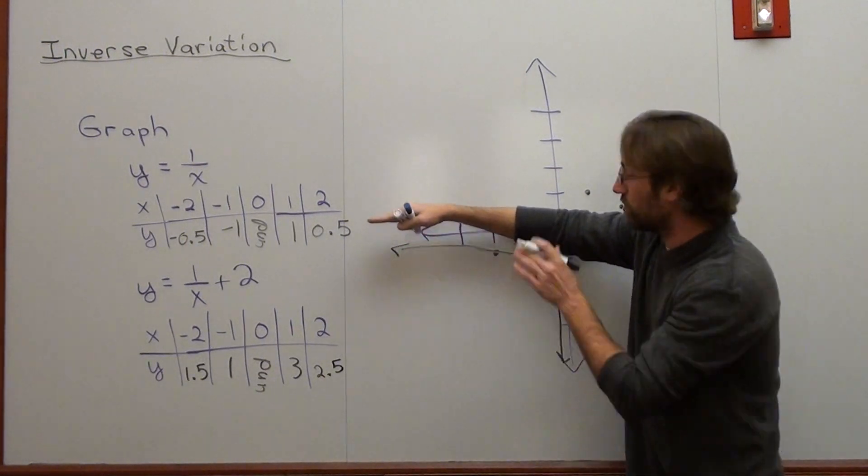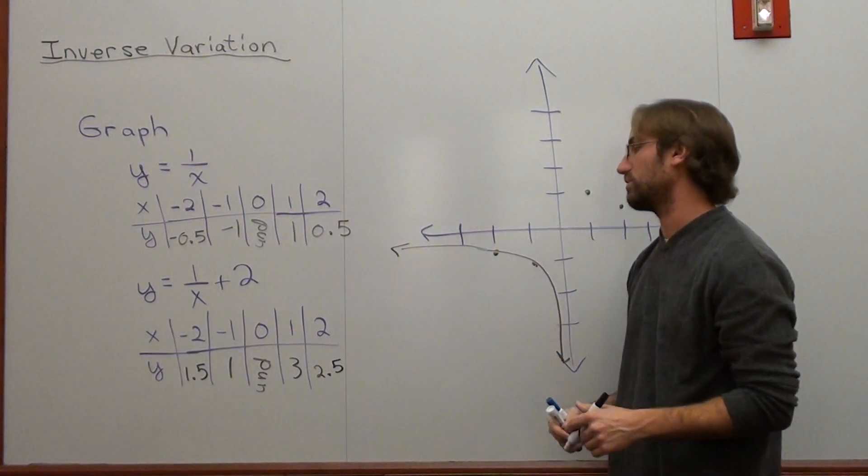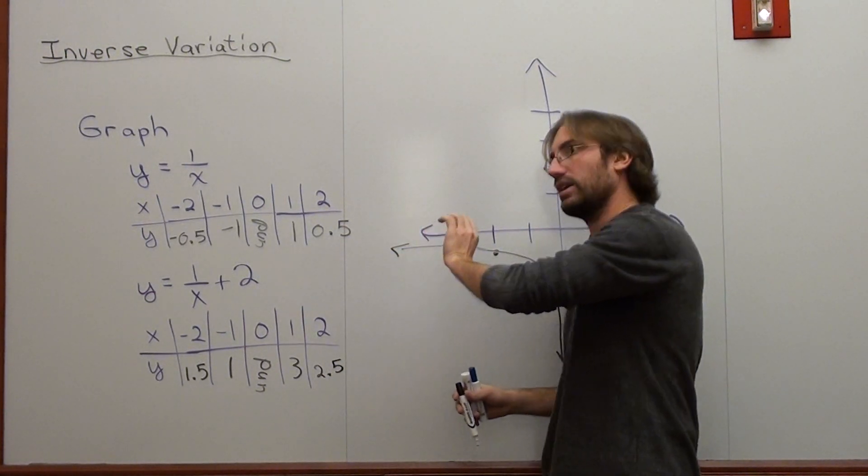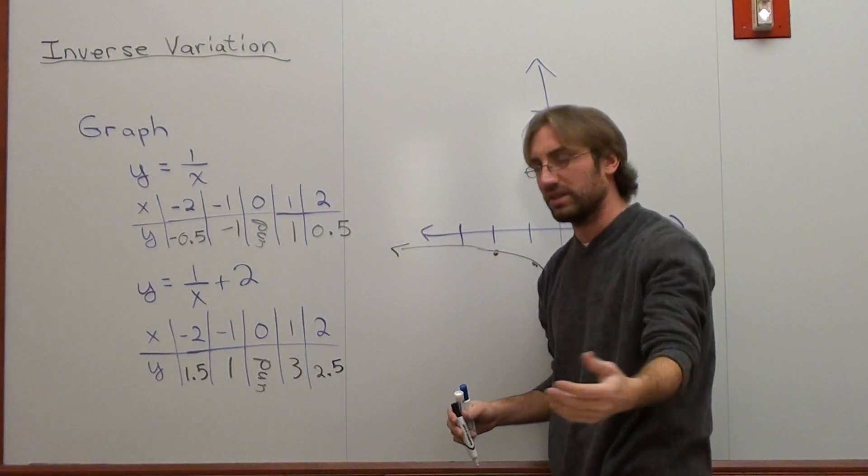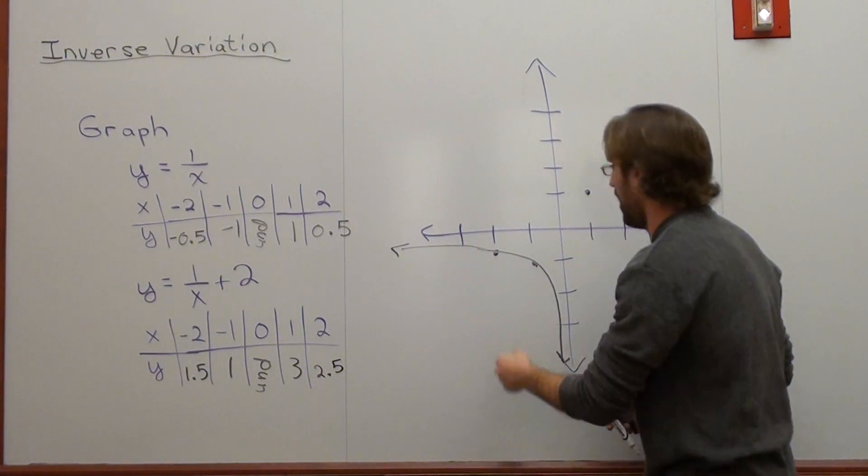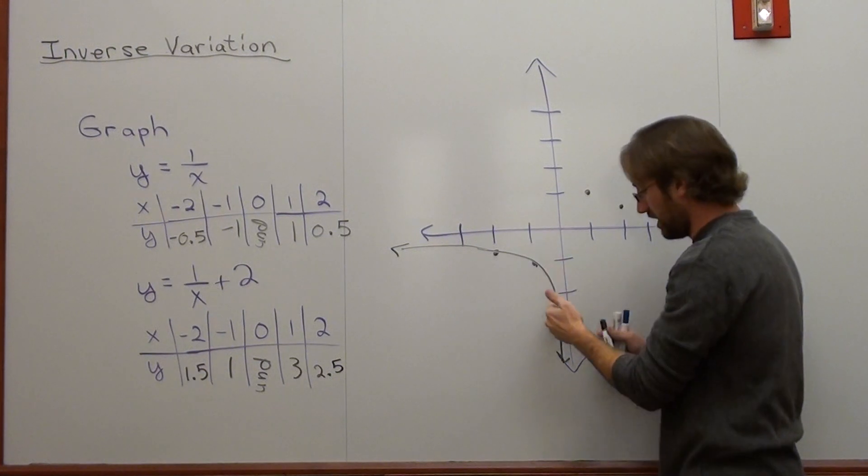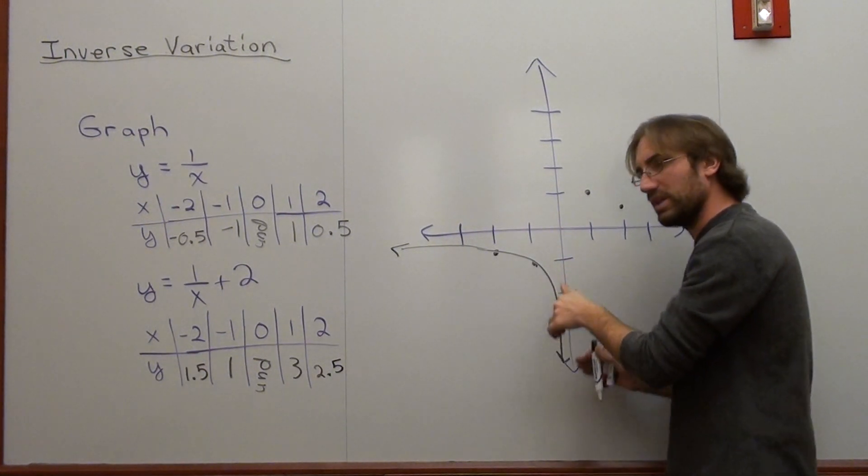There's a horizontal asymptote, which means it never touches, and there's a vertical asymptote. As x approaches negative infinity, y is going to get infinitely closer to 0. That's a limit, but we haven't talked about limits specifically. As x approaches 0 from the left, the limit's going to be negative infinity.